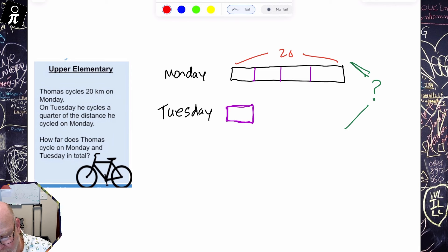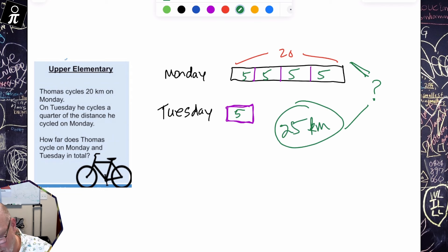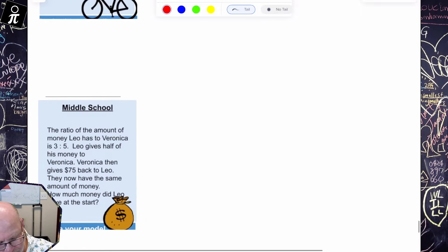And then it says, how far does he cycle on Monday and Tuesday in total? So what does that mean? That means I am looking for this number right here. There's my question mark to represent the total. And then we could see, if four quarters is equal to 20, that means each quarter is equal to five, which means this Tuesday unit is equal to five, which means the total is 25 kilometers as our total because we have 5, 10, 15, 20, and 25.